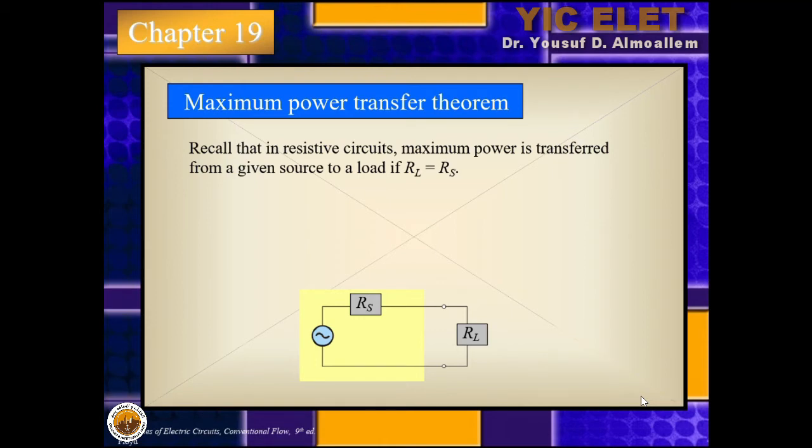The maximum power transfer theorem is very similar to the one we've seen in DC circuits. If you recall, in resistive circuits, maximum power is transferred from a given source to load if RL is equal to RS or RTh. So if we have the RTh here and this is the VTh, the maximum power is transferred to the load if RL equals RS or RTh.